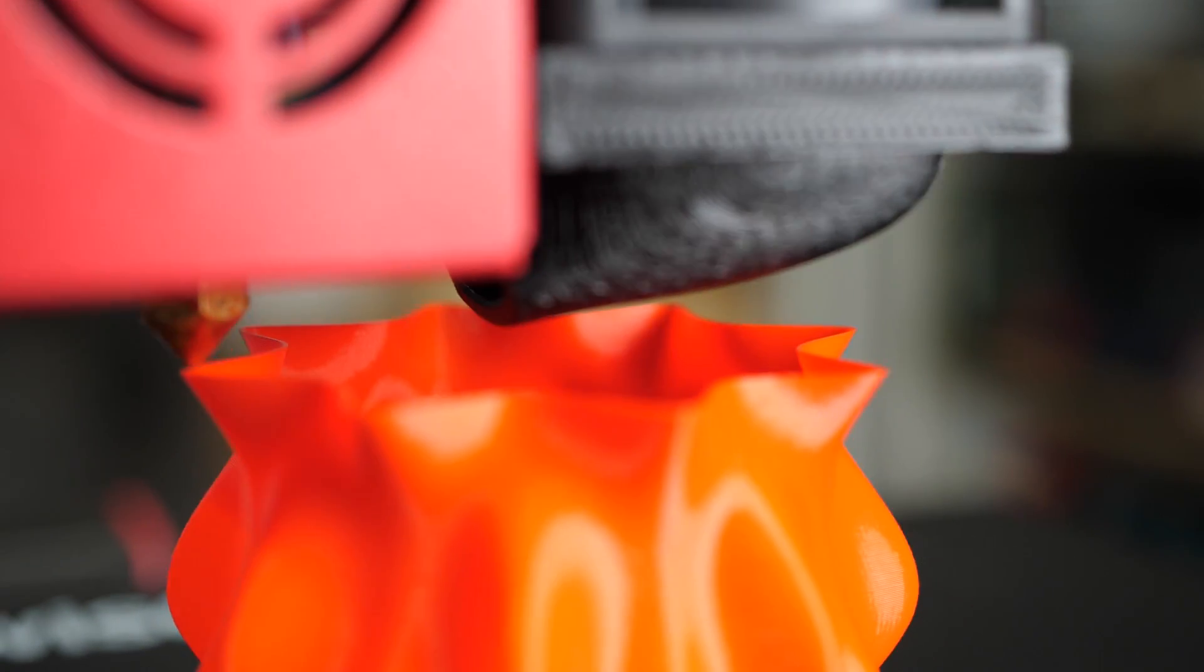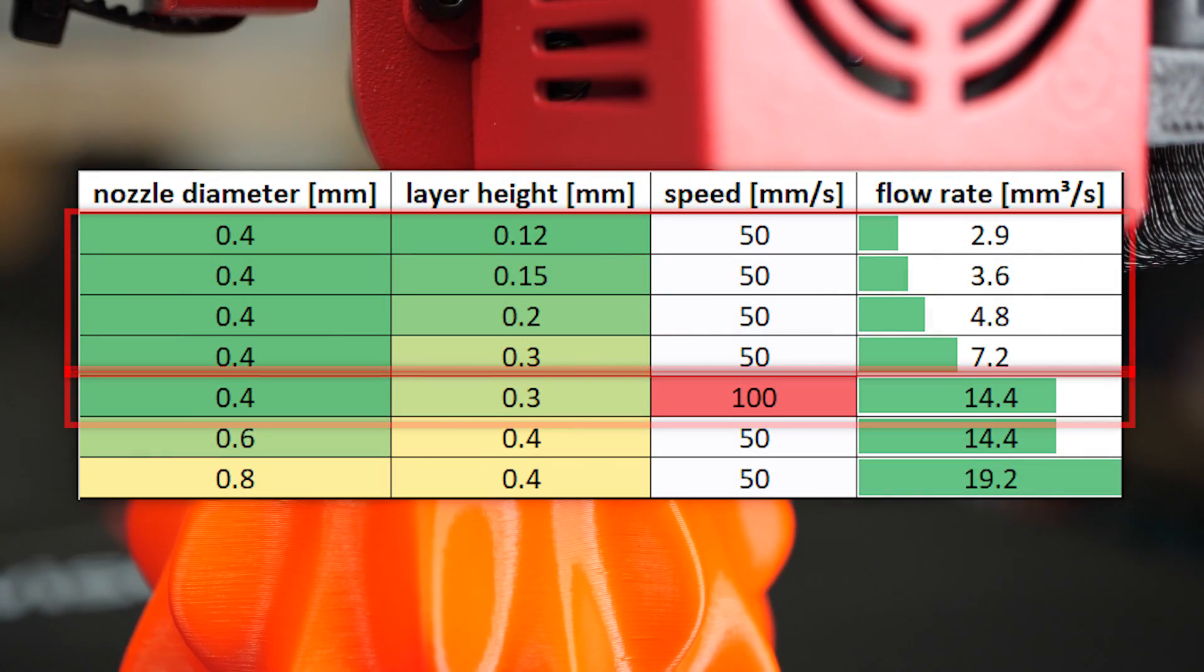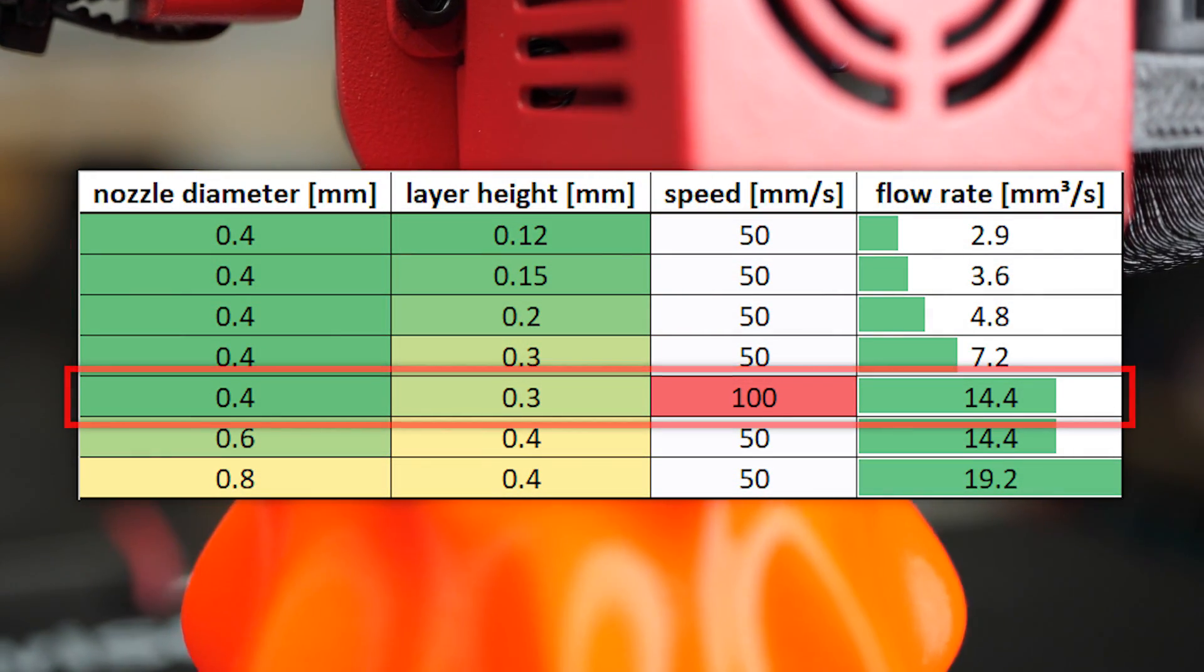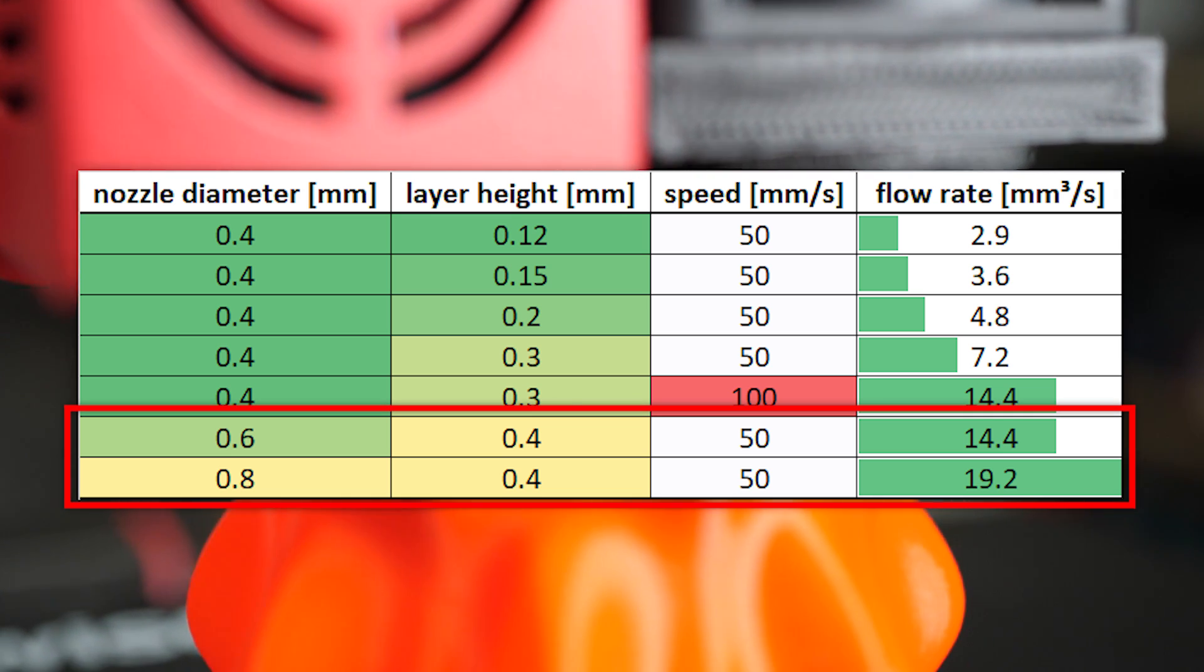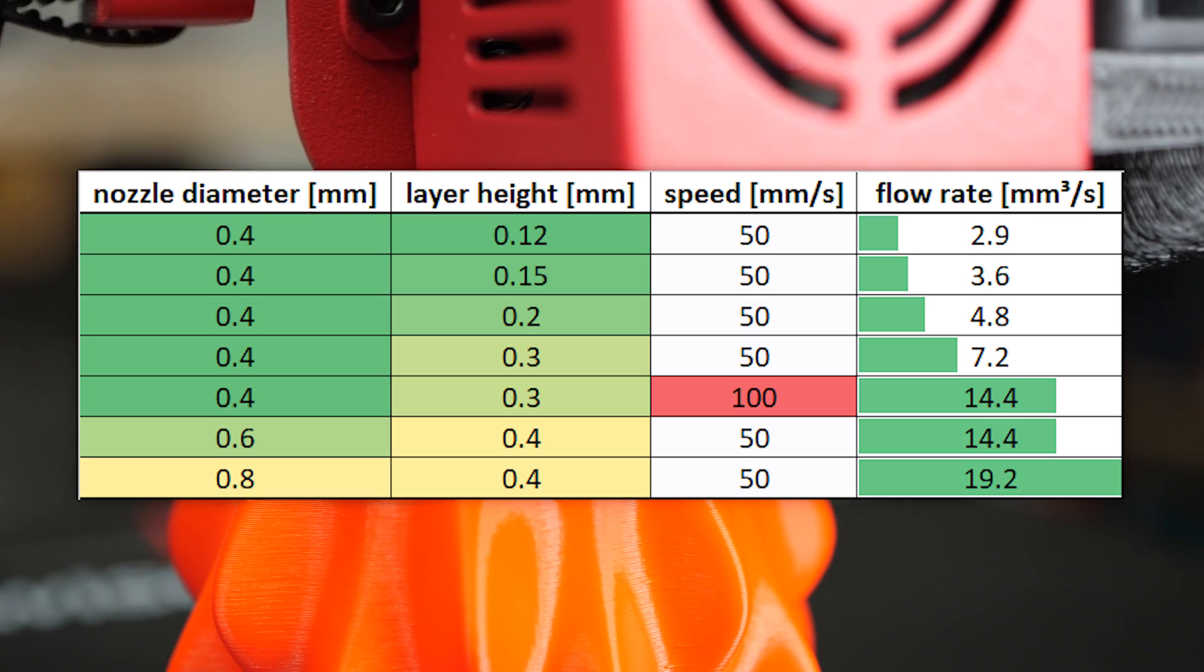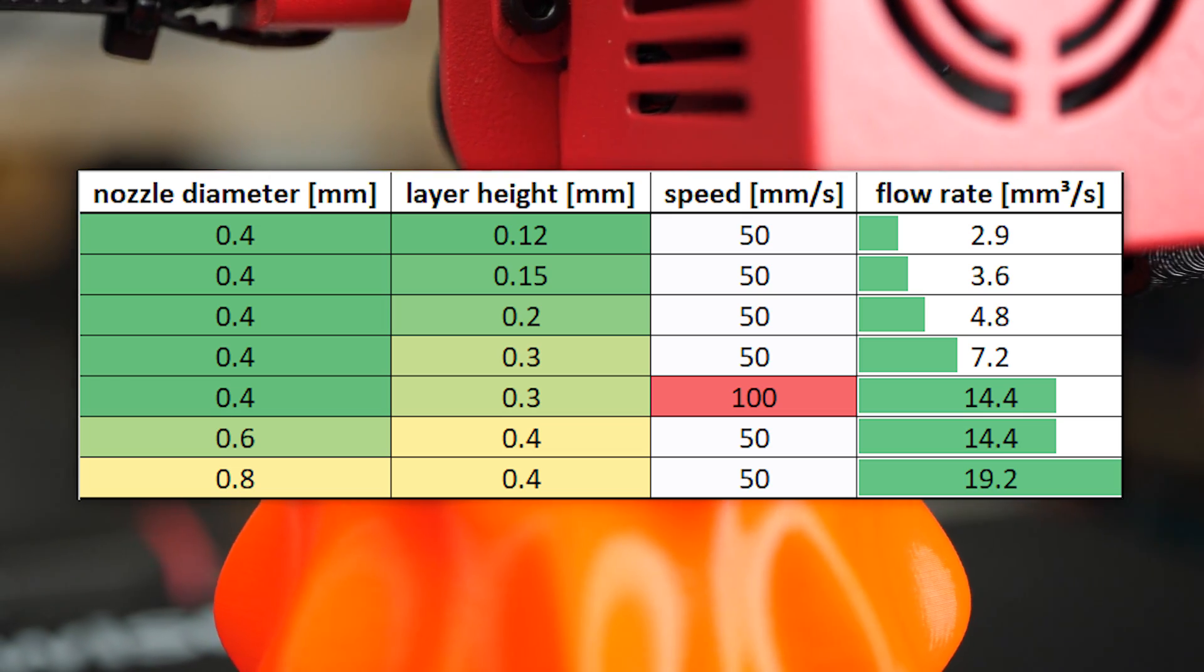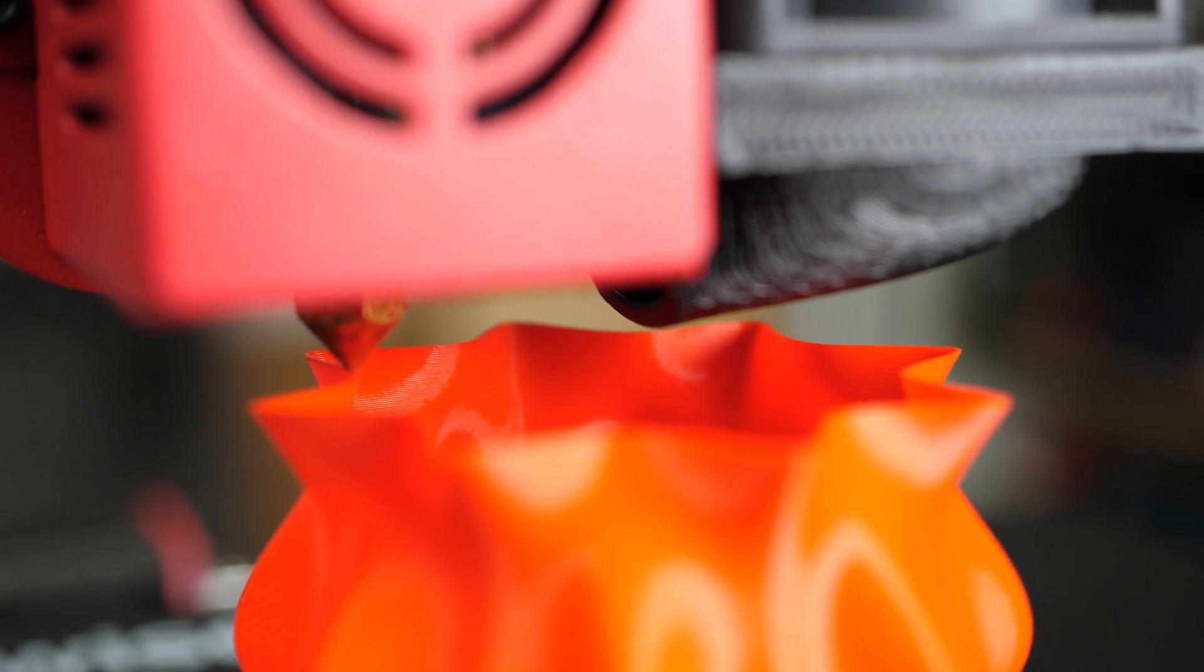If you are printing with a standard 0.4mm nozzle this value is usually single digit if you are not going crazy fast. Bigger nozzles and the often resulting thicker layers can drastically increase that value. The question now is how can you find out what is still possible with your current setup and when it might be a good idea to upgrade to a Volcano heater block?